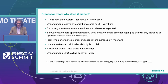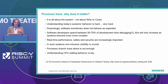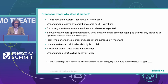Providing non-intrusive visibility is crucial because once you start to instrument your code — adding print statements or doing things like that — the behavior of the system changes. You get what we refer to as Heisenbugs, which makes it really hard to solve the problem. Process branch trace alone is often not enough, and it is crucial to be able to understand CPU stalling behavior.